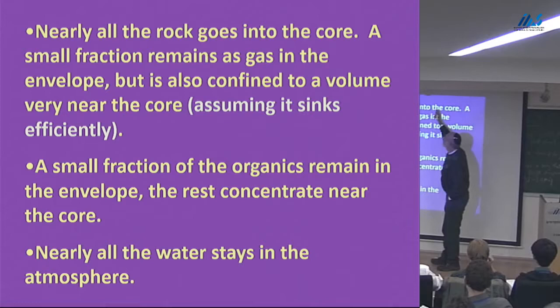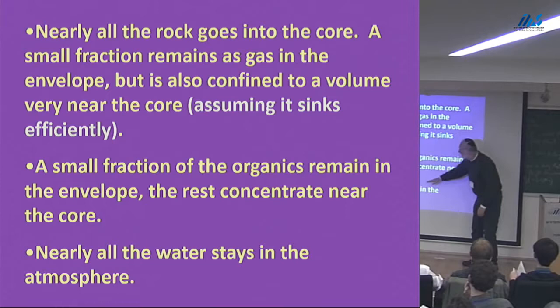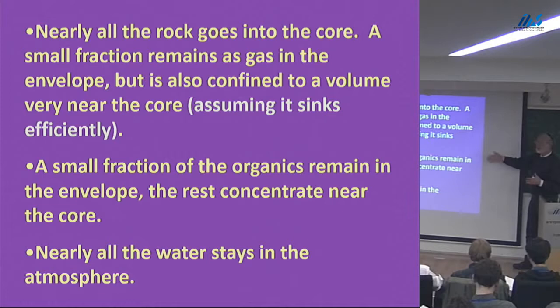So all the rock — nearly all the rock — goes into the core. A little bit stays just above the core in a very warm region. Same thing for the organics — they can take up a little bit more space. But the water stays in the envelope. So I can raise the mean molecular weight of the envelope, and this may be another way of shortening the time for forming a planet.